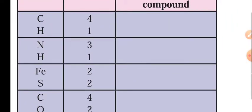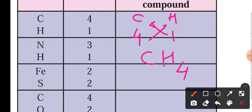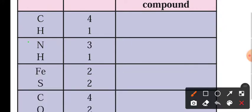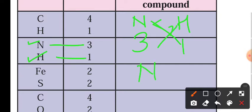Let us take C and H. Valency for carbon is 4 and valency for hydrogen is 1. On cross multiplication, the formula becomes CH4 — I am not writing 1 since a subscript of 1 is not required. Next, N and H: valency for N is 3 and for H is 1. Through cross multiplication it becomes NH3.